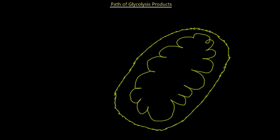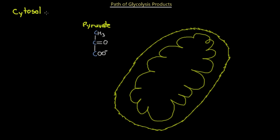We have our mitochondria — a double membrane system — and this is our pyruvate that we've made through the process of glycolysis. Pyruvate is the three-carbon molecule made in the cytosol or cytoplasm where glycolysis occurs. The product of glycolysis is two pyruvate molecules; however, for the purpose of this slide we're going to look at just one to see exactly what happens to it.